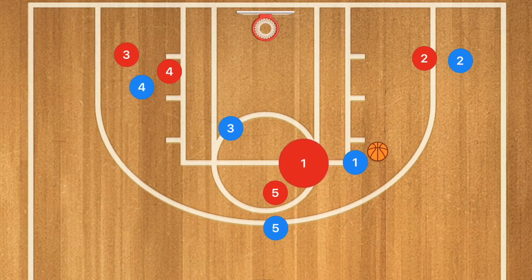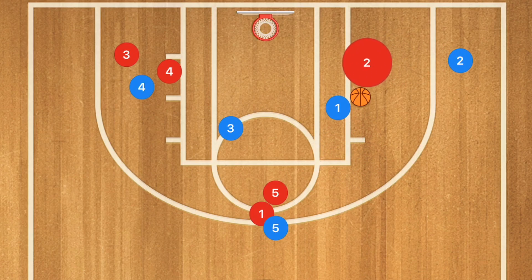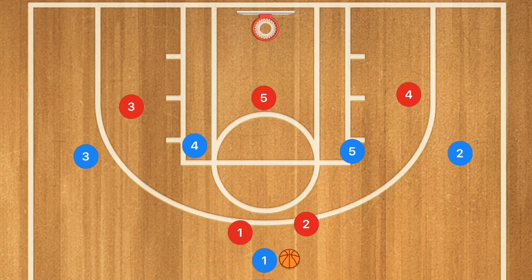There's also another option: player one continues to drive and player two pops down. Player one can then pass out to player two for a three-pointer or deep mid-range shot. I'll now show the same play as a high one-four option against a 2-3 zone, since most teams are running 2-3 zones.